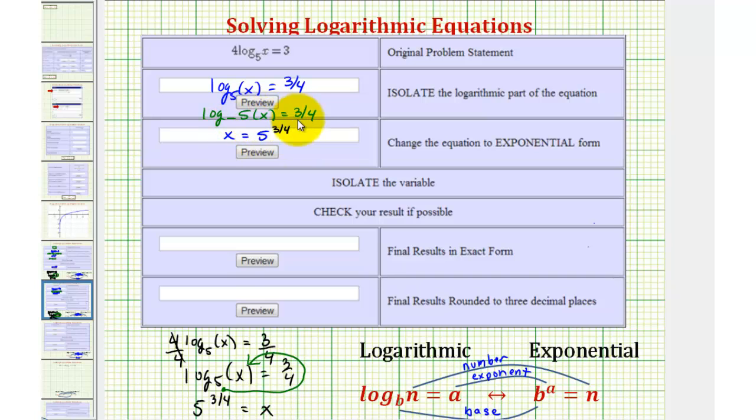To enter this from the keyboard, we would enter five carat, which is the exponent key, which is shift six, and then in parentheses, three-fourths.